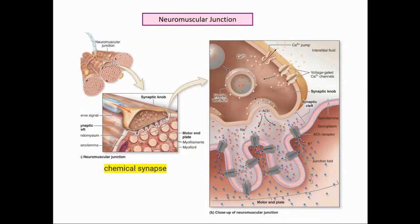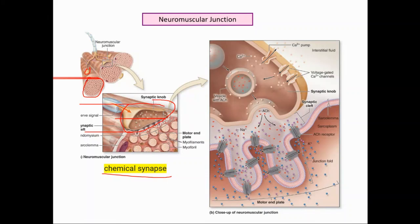Now let's zoom into a synaptic knob. This is called a synaptic knob — it's a chemical synapse. You're talking about two cells here: this is the termination of a nerve cell, and this is a muscle fiber. The two plasma membranes — of the nerve cell and the muscle cell — are still separated; there is no fusion. There is a space at the synapse level known as the synaptic cleft. The cells are very close but not fused together.